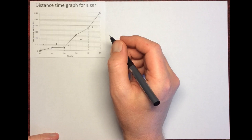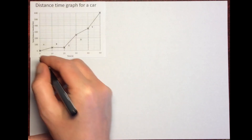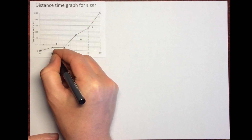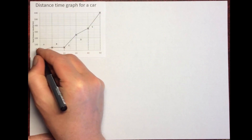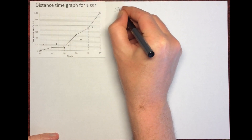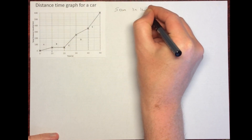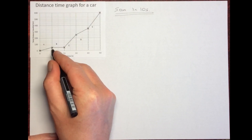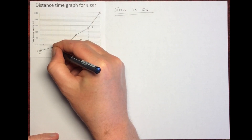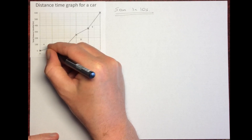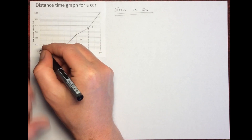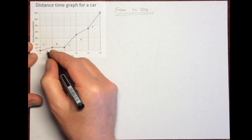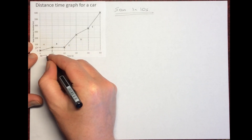Let's look at section A. Over the first 10 seconds, we're traveling a distance of 50 meters. The distance is the difference between the starting point, which is zero, and the end point, which is 50 meters, and that takes us a period of 10 seconds.